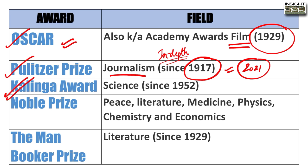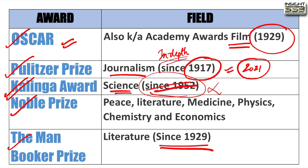Kalinga Award is associated with science. For awards like Oscar, Nobel Prize, and Booker Prize, it is important to know the associated field. The Nobel Prize is given in six fields. When it was started, it was given in five fields — economics was added in 1969.